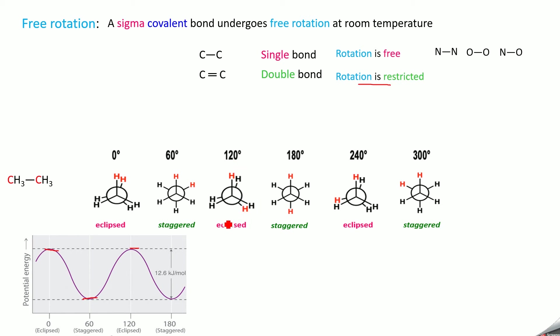At 120 degrees, the hydrogens are eclipsed with each other and the potential energy of this form is very high — this is the highly unstable eclipsed form. From here, when you rotate, the potential energy decreases. Likewise you will keep getting these alternating forms, and at 180 degrees you will again get the staggered form.